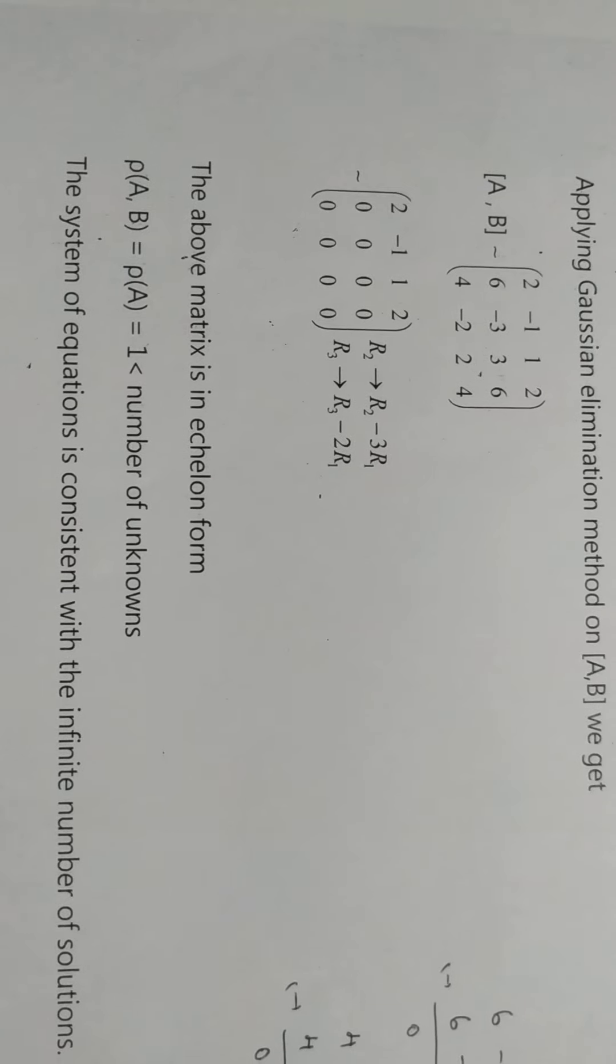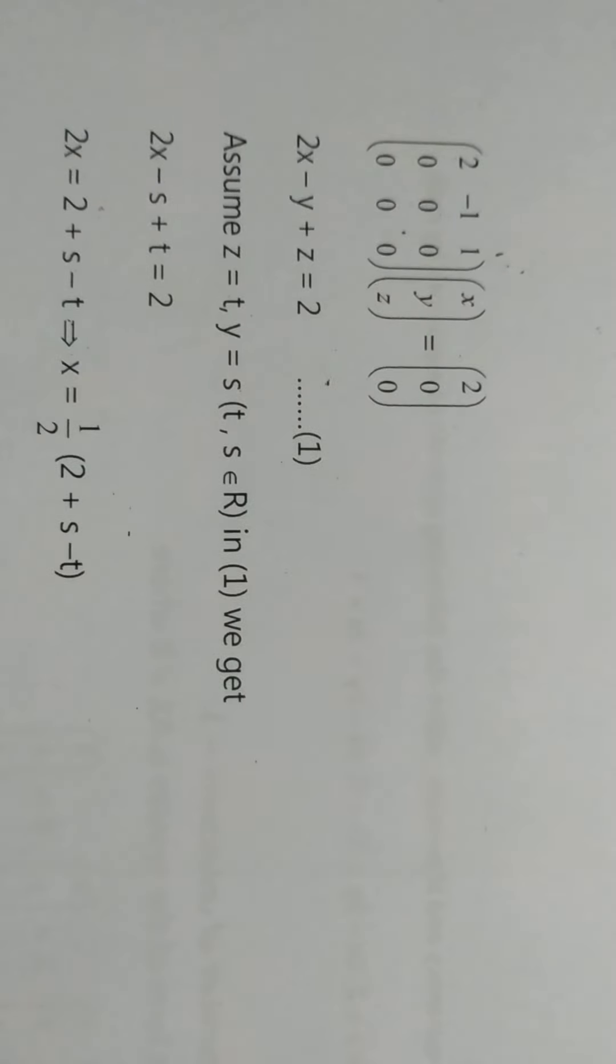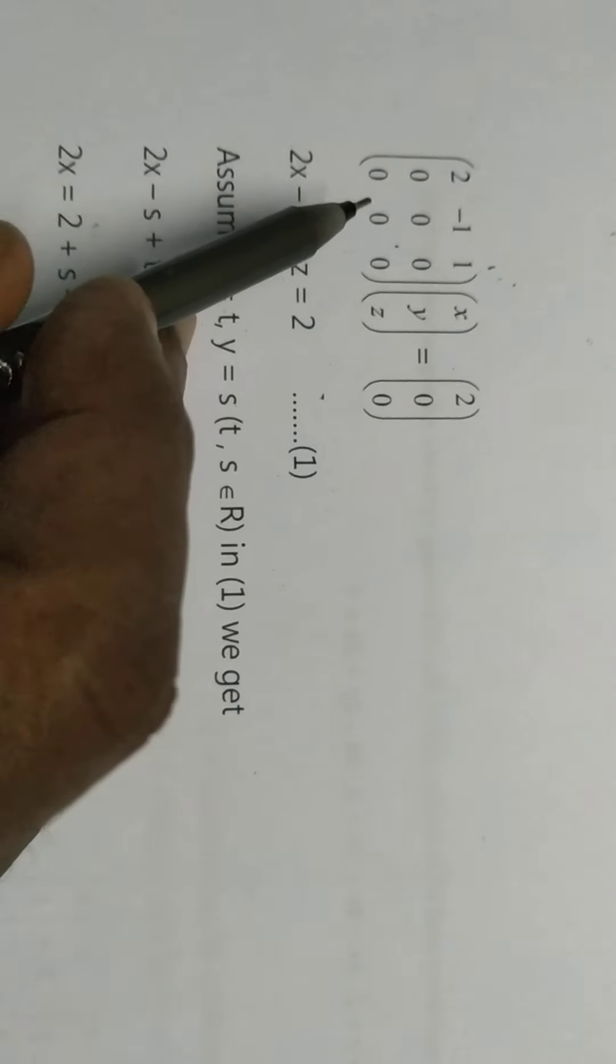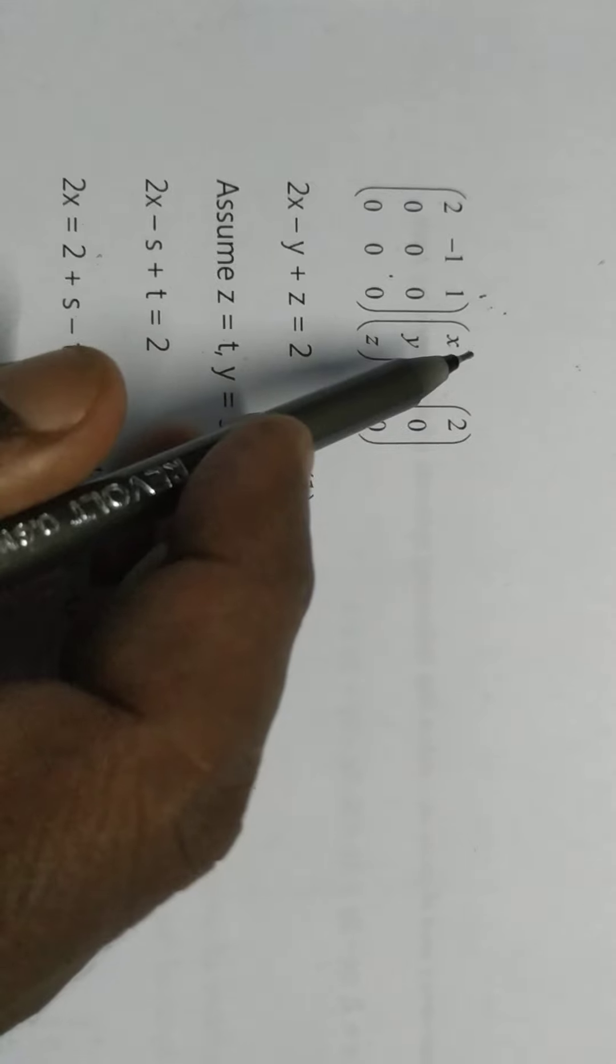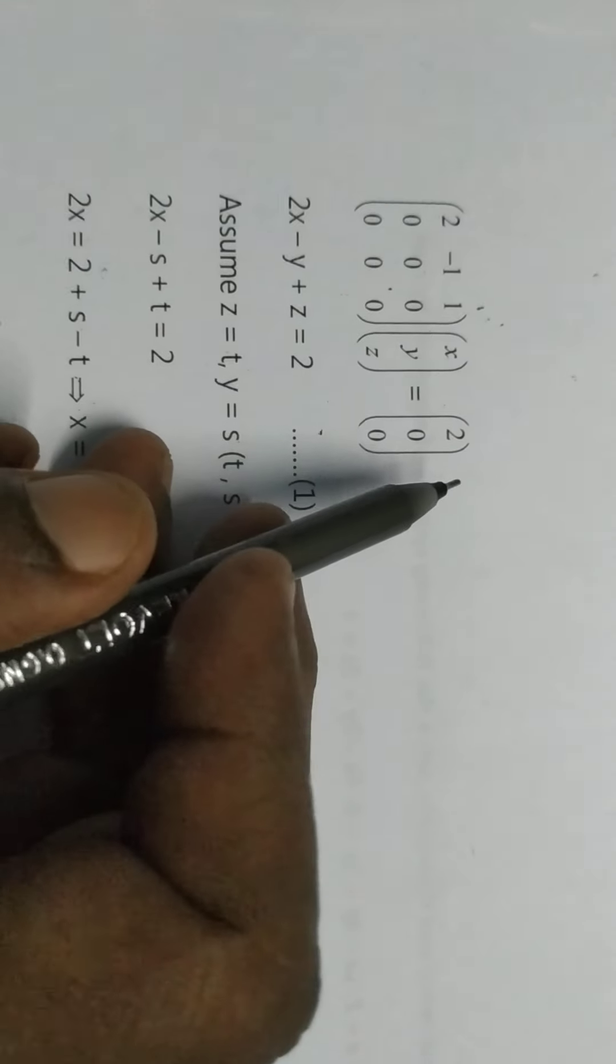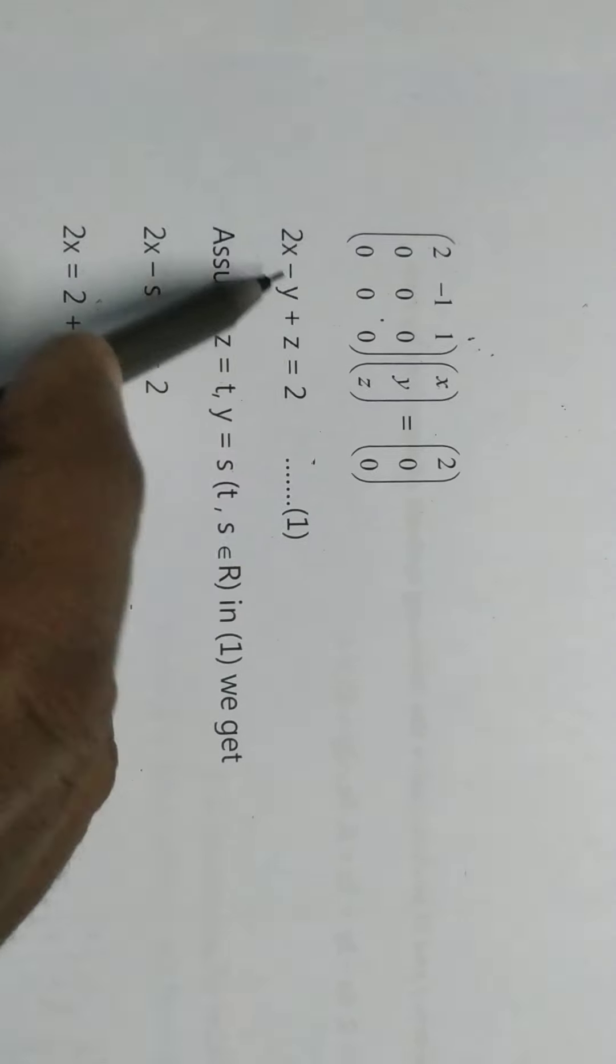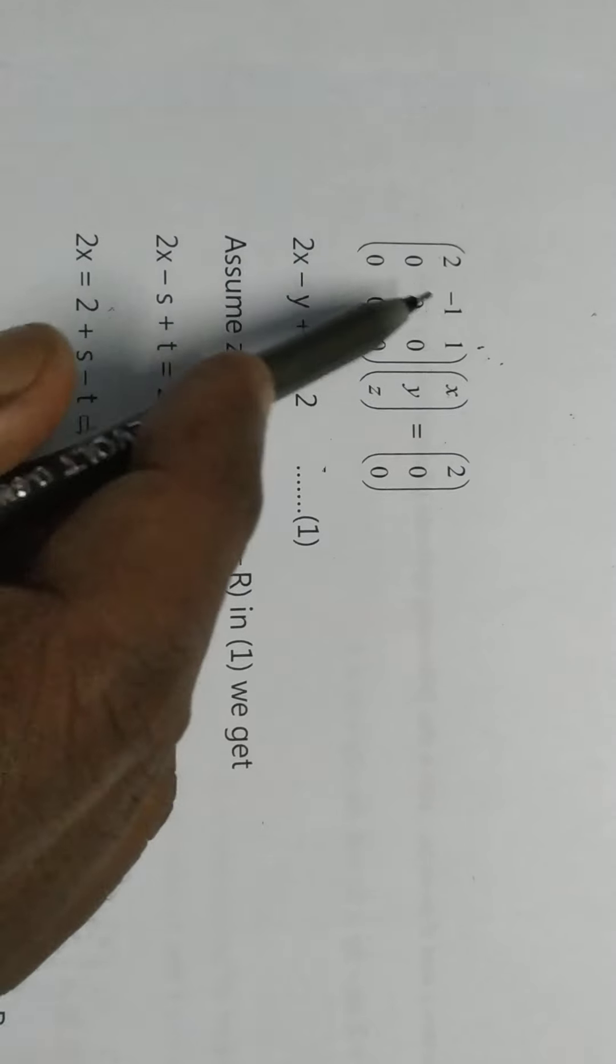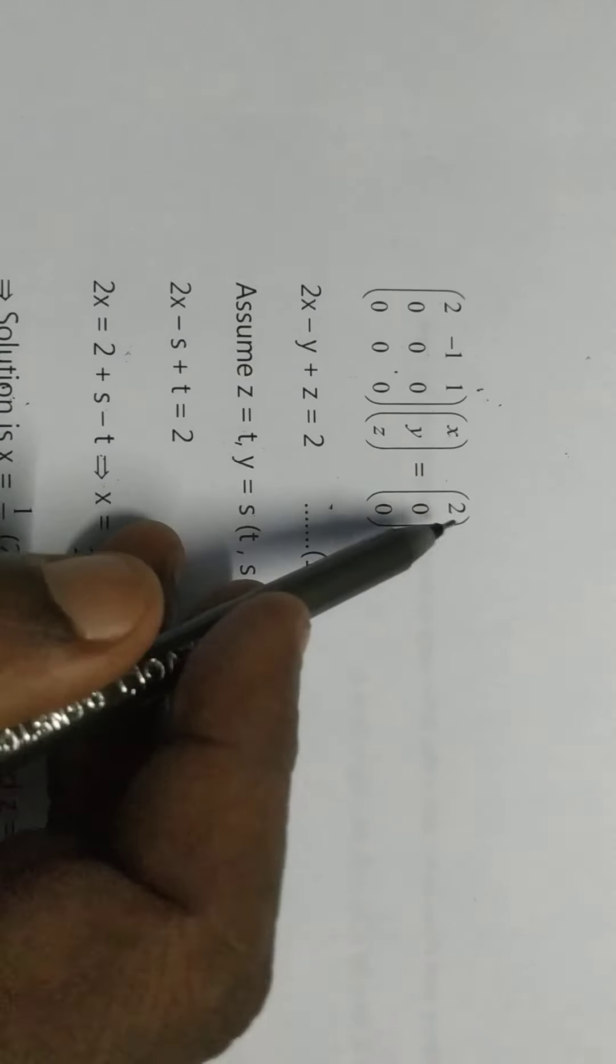Now to find the solution, AX equals B. A is 2 minus 1, 1, then 0, 0, 0, then 0, 0, 0. X is the variables X, Y, Z. B is 2, 0, 0. From the first equation: 2X minus Y plus Z equals 2.